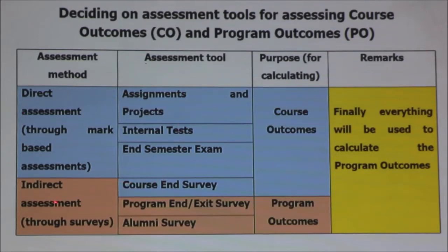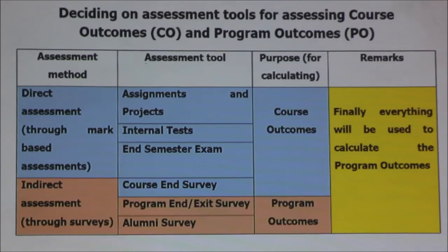The indirect method used for assessing course outcomes is the course end survey. After the course is fully completed, a survey form is given to students. The survey form has questions related to the course outcomes, asking the student to rate — perhaps on a five-point Likert scale — to what extent, by undergoing this particular course, they feel they have achieved course outcome 1, course outcome 2, and so on up to course outcome 6. This makes it an indirect assessment method for assessing the course outcomes.